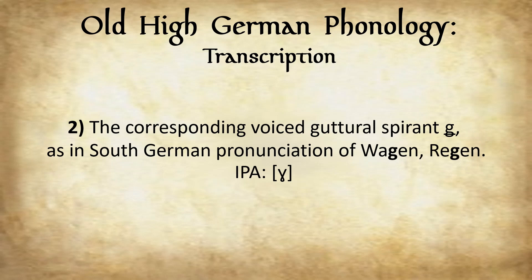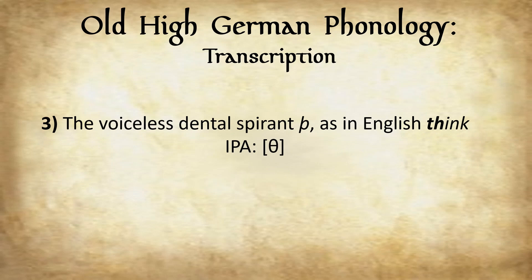The voiced guttural spirant is the sound as in South German pronunciation — like 'Wagen' or 'Regen.' I don't know exactly which part of the German-speaking world this pronunciation comes from, but Armitage says South German, so this could be southern Germany or perhaps a little beyond. Taking this back 1,500 or so years to the Old High German period, the words would have been pronounced 'wagen' and 'regen.' Moving on, we have the voiceless dental spirant — the 'th' sound as in English 'think.'